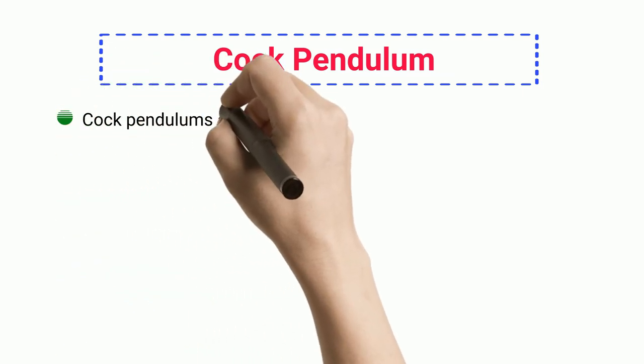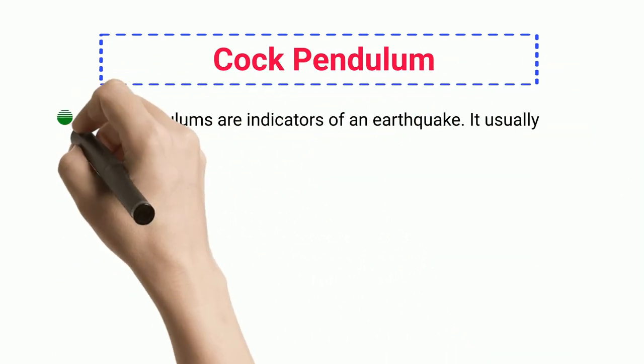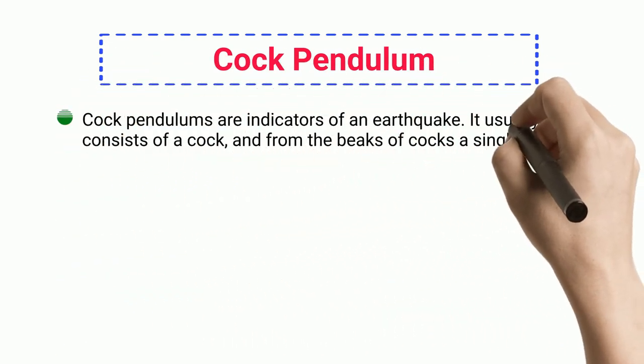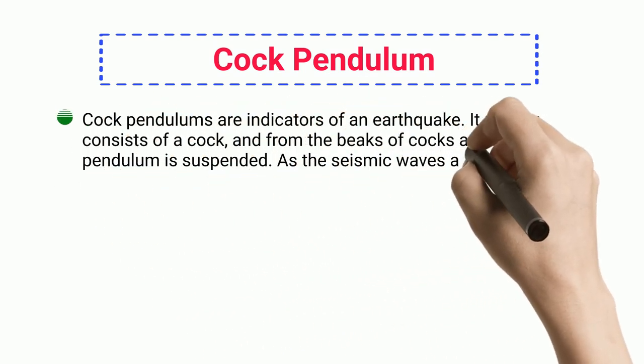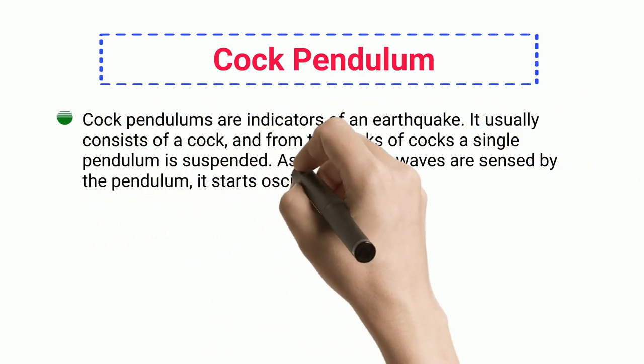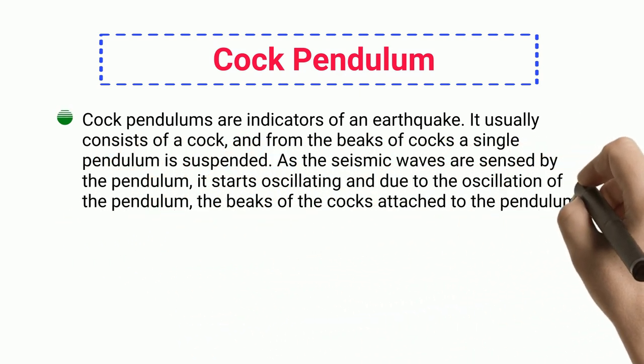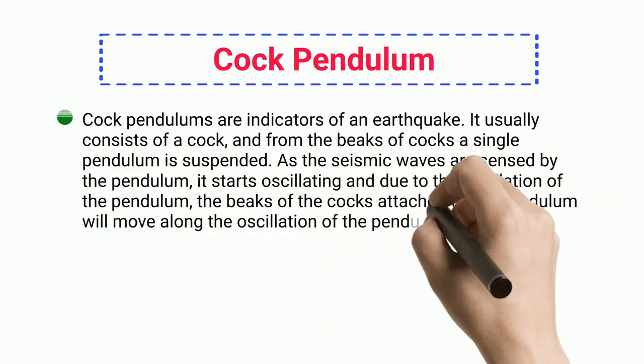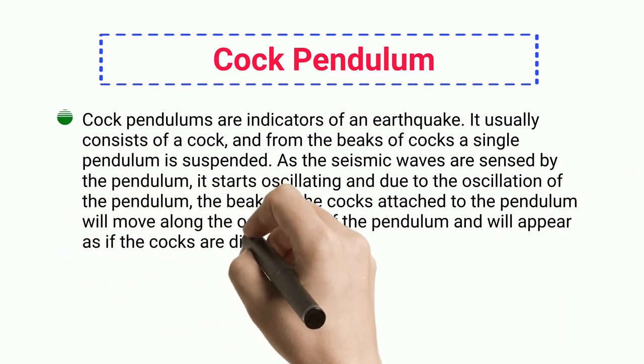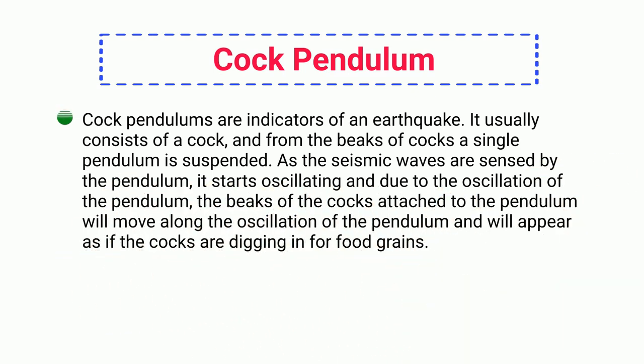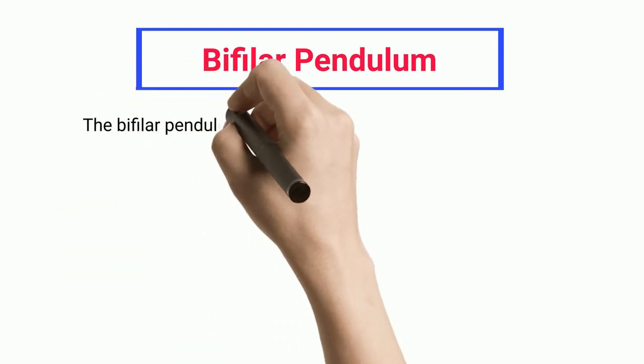Cock Pendulum: Cock pendulums are indicators of an earthquake. It usually consists of a cock, and from the beaks of cocks a single pendulum is suspended. As the seismic waves are sensed by the pendulum, it starts oscillating. Due to the oscillation of the pendulum, the beaks of the cocks attached to the pendulum will move along the oscillation of the pendulum and will appear as if the cocks are digging for food grains.